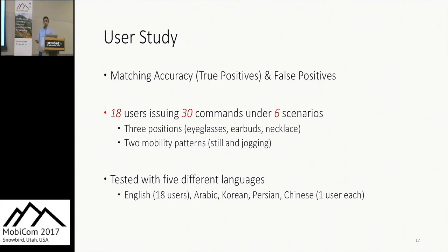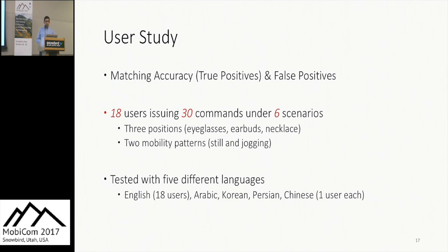To evaluate V-Auth, we recruited 18 users from Michigan and asked them to issue 30 commands under six scenarios: three wearable positions — eyeglasses on the nose, back of the neck, and earbuds — while sitting at a table, sitting in a chair, and jogging in a room, to see if movement affects accuracy. The 30 commands were in English, and leveraging the multilingual diversity of our lab, we also asked one user to try the system with Arabic, Korean, Persian, and Chinese commands.